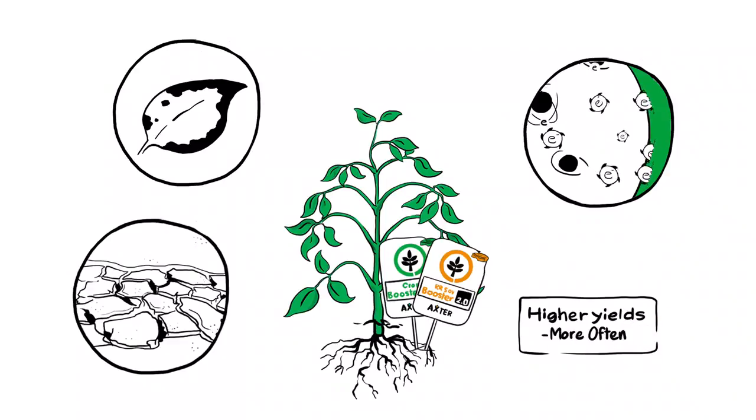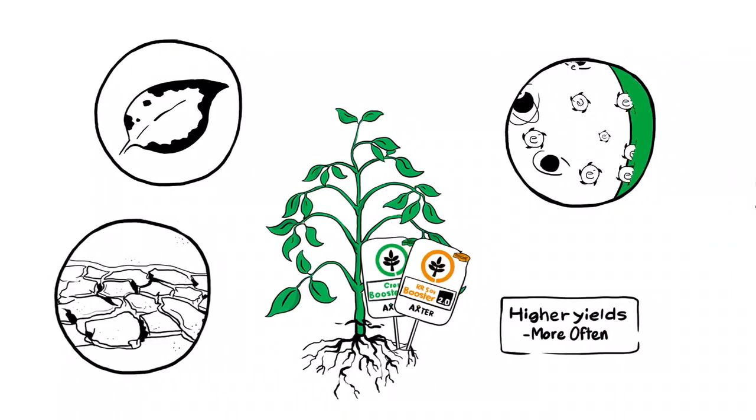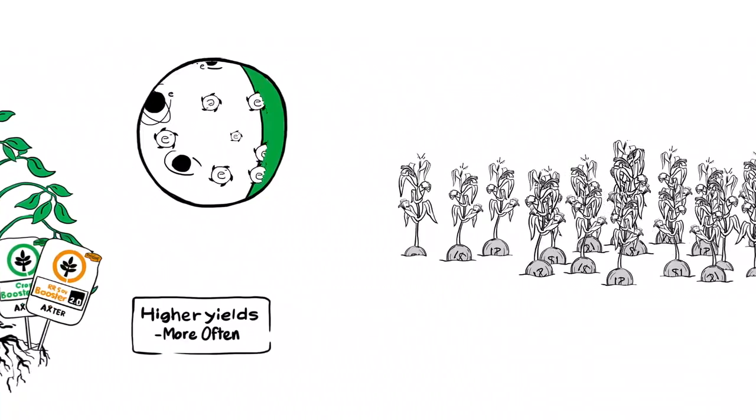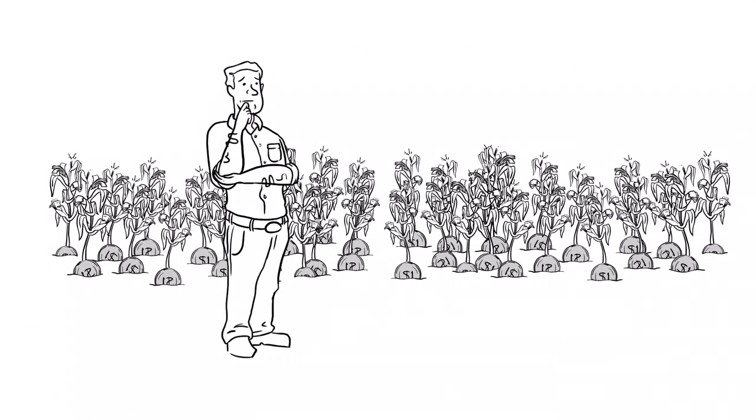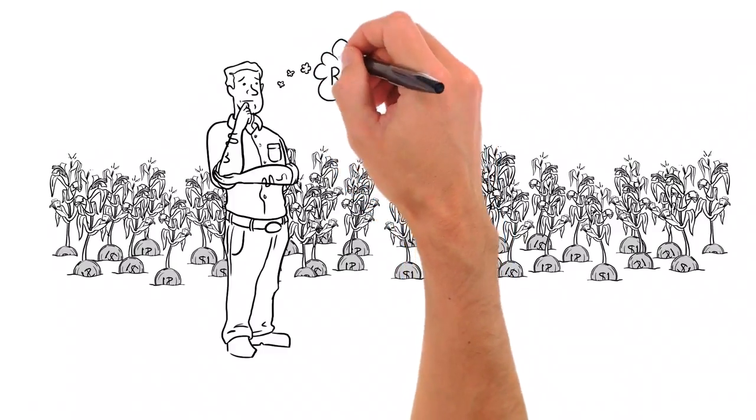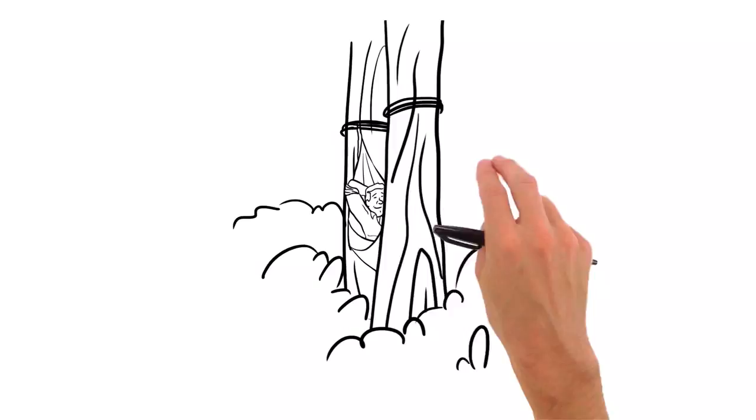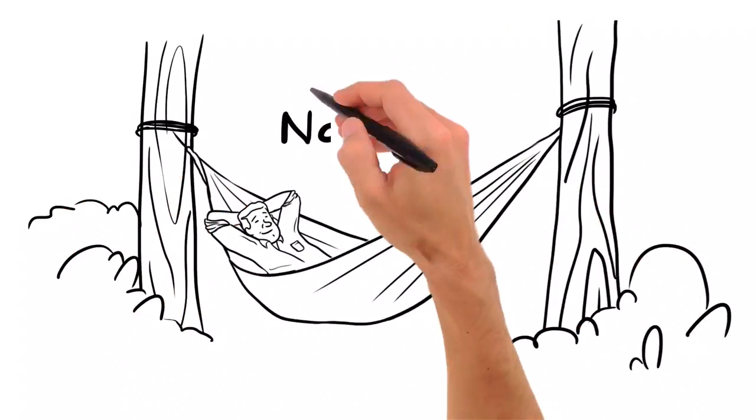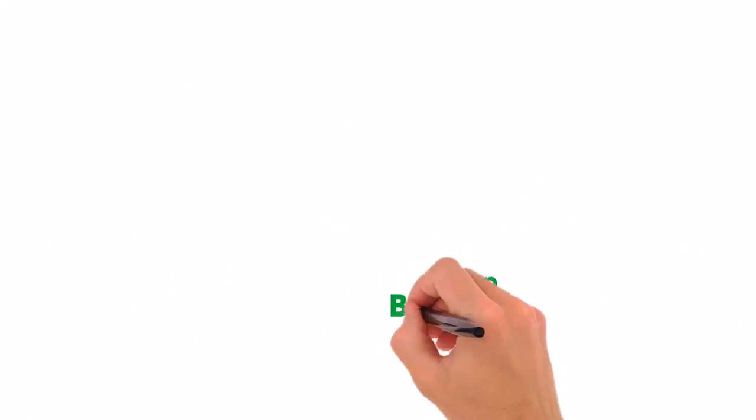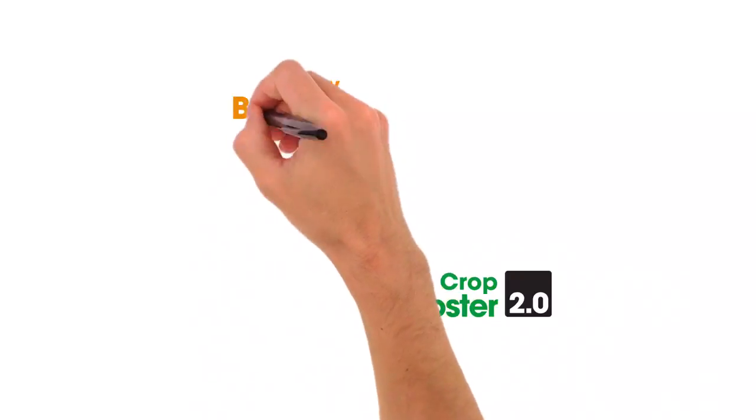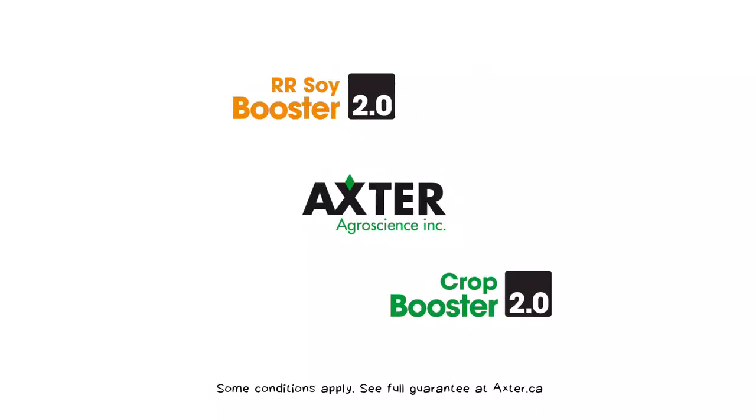And Axter AgroScience guarantees it. If you don't experience a yield increase at least worth the cost of CropBooster 2.0 or RR SoyBooster 2.0, Axter AgroScience will refund the product. No extra passes over the field and no risk. Try CropBooster 2.0 and RR SoyBooster 2.0. Higher yield guaranteed.